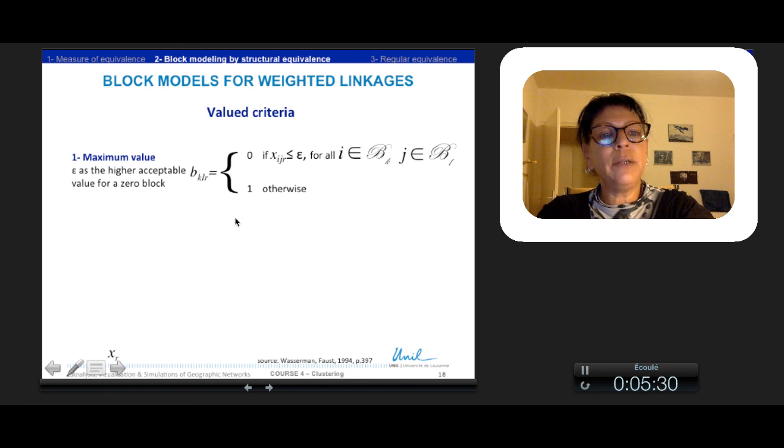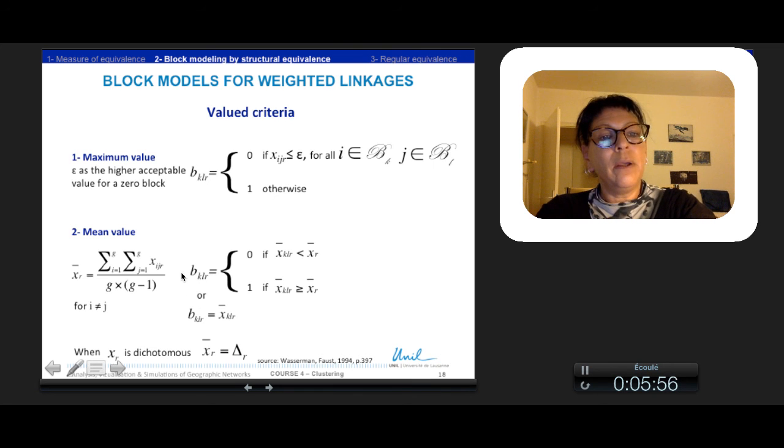For weighted links, one can use value criteria. The maximum value criteria is analogous to the zero block for dichotomous relations. Blocks that contain only smallest values are defined as zero blocks, and blocks containing some largest values are defined as one blocks. Another criterion is the mean value. If the mean value of the links between blocks K and L is greater or equal to the general mean, then the block is defined as one block. This is analogous to the alpha density of dichotomous relations.